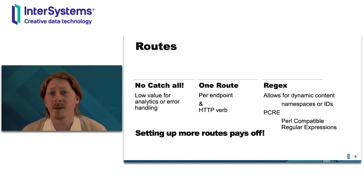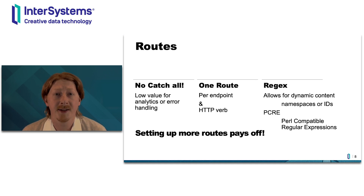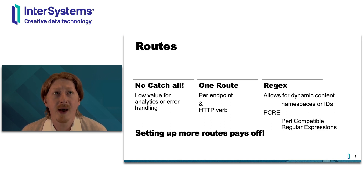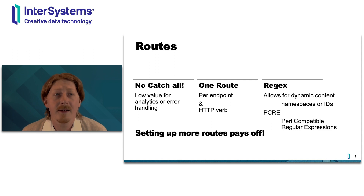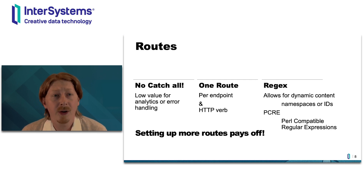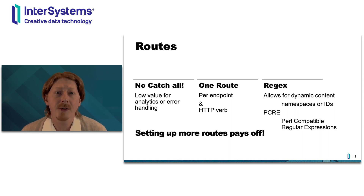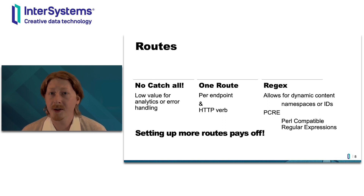Now let's talk about routes. This is a really important topic — never build a route that is a catch-all for all of your API traffic. Never build a route capturing just slash API or slash API slash v1 for your first API version. It's not giving you enough granularity to manage your API traffic. It might tell you that you got 5,000 requests over the last five minutes, but you won't know which endpoints were called, which have authentication problems, or which are seeing high load.